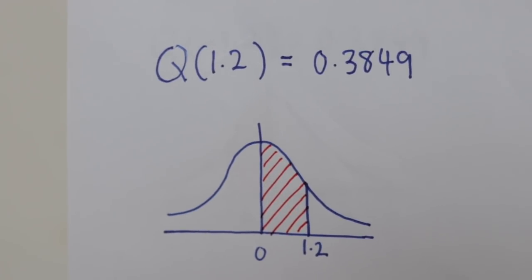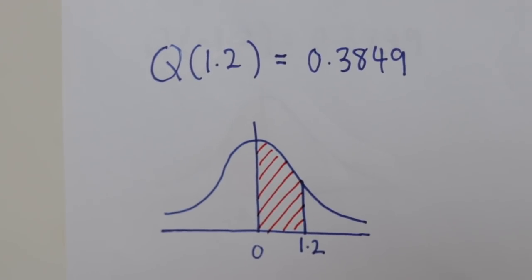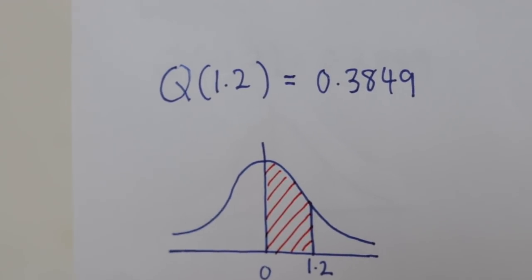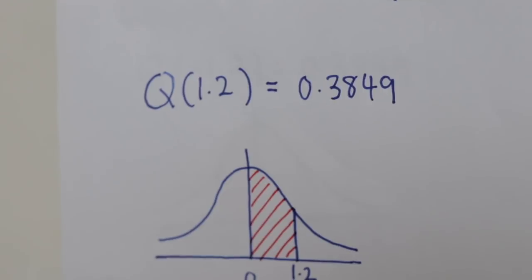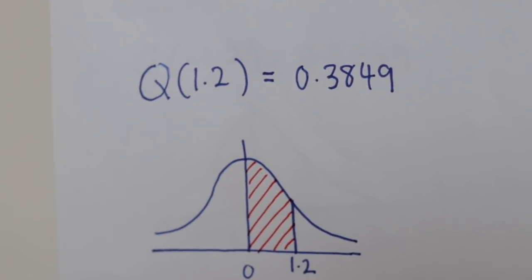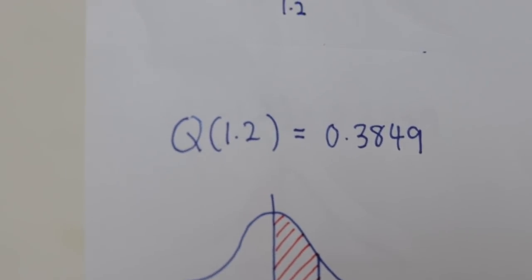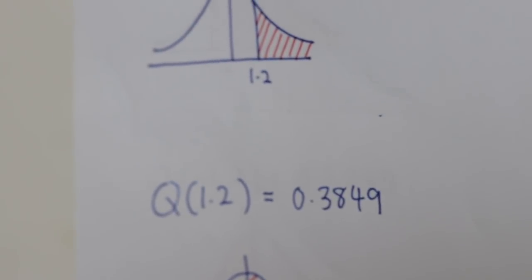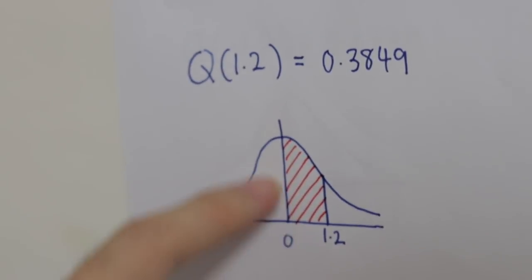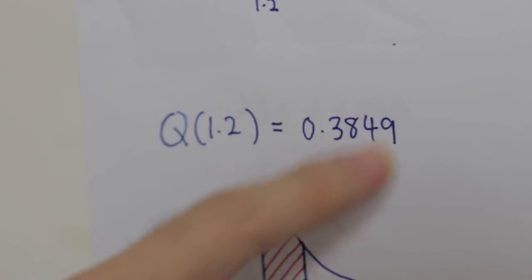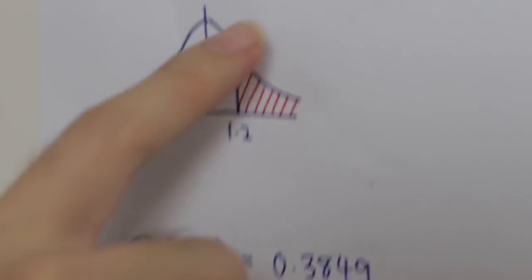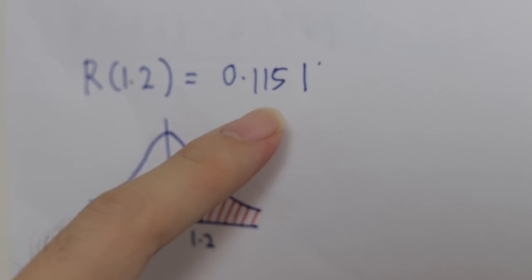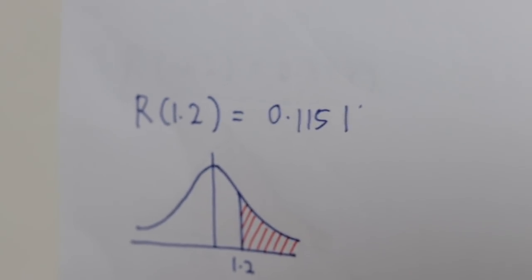For Q 1.2, the shaded area goes from 0 to 1.2, giving a value of 0.3849. If you want to get R 1.2, just use 0.5 minus 0.3849, and you will get 0.1151. This shows the relationship between P, Q, and R.